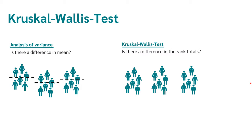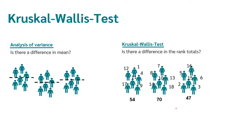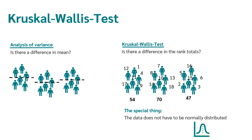What is a rank and what is a rank sum? In the Kruskal-Wallis test, we do not use the actual measured values. Instead, we sort all people by size: the person with the smallest value gets rank 1, the person with the second smallest value gets rank 2, the person with the third smallest value gets rank 3, and so on, until each person has been assigned a rank. Then we simply add up the ranks from each group, giving rank sums — for example, 42 for the first group, 70 for the second, and 47 for the third.